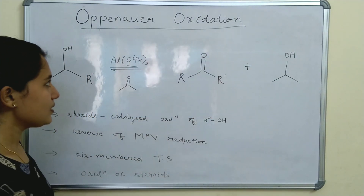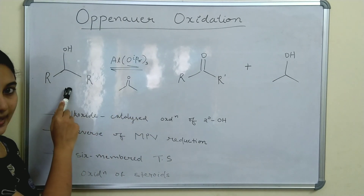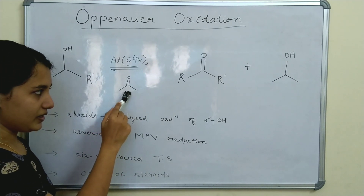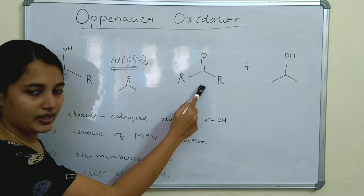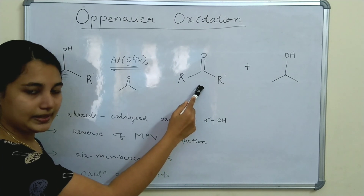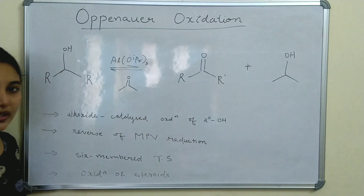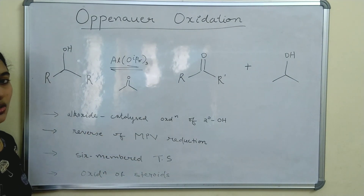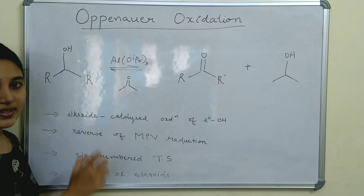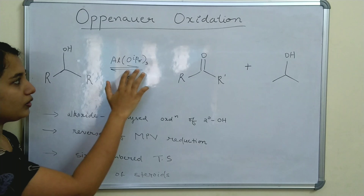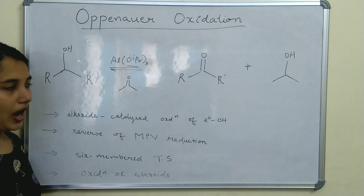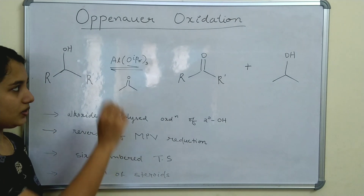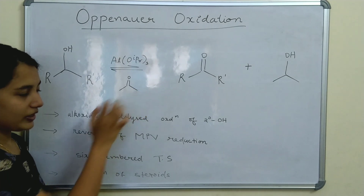Oppenauer oxidation is the oxidation of a secondary alcohol in presence of aluminium alkoxide and a ketone to give the corresponding carbonyl compound. It is called Oppenauer oxidation. This is an aluminium alkoxide catalysed reaction, and here we are using aluminium tri-isopropoxide as the catalyst.